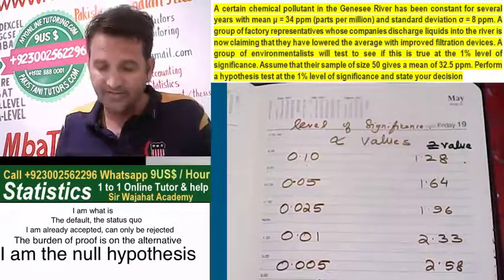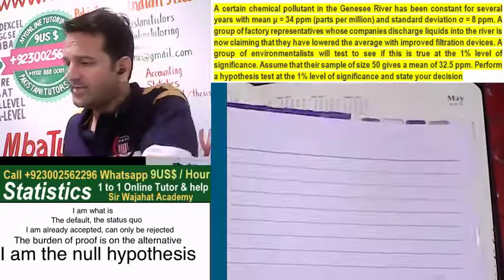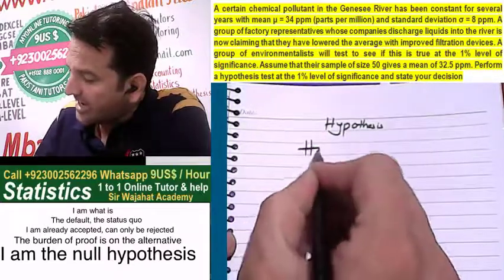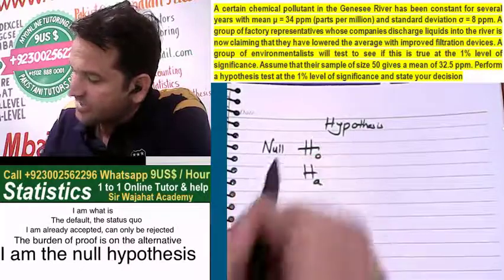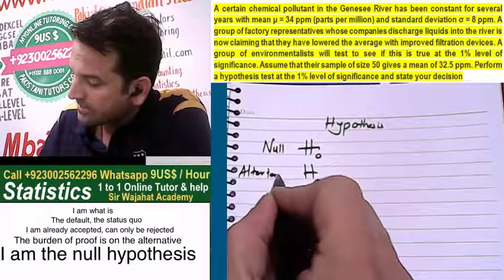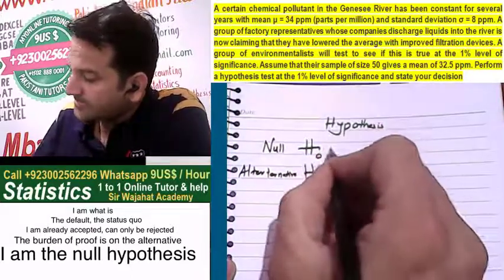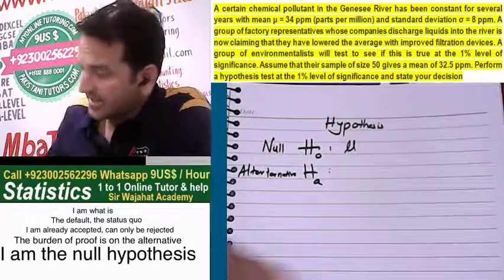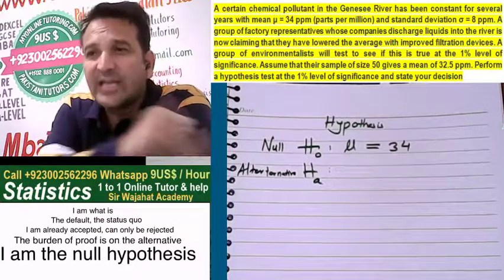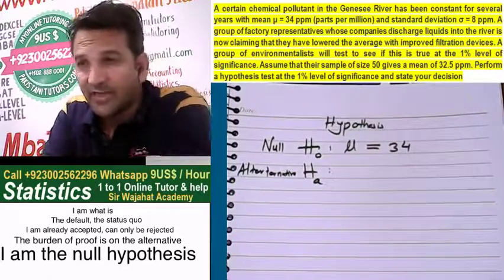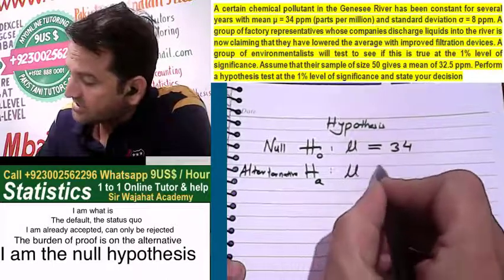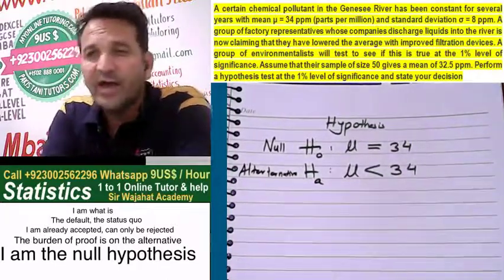First of all, we will develop our hypothesis. We have H0, the null hypothesis, and HA, the alternative hypothesis. The claim is that mu equals 34, and the factory is saying that mu has decreased. So H0: mu = 34, and HA: mu < 34. This will be a one-sided, one-tailed test.